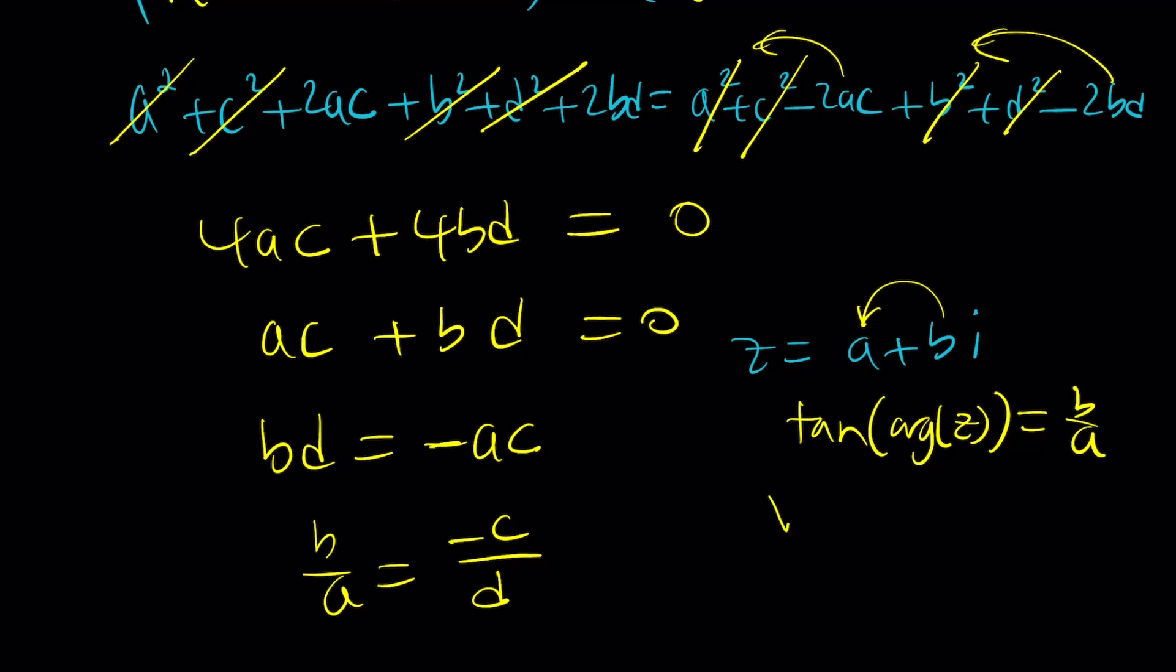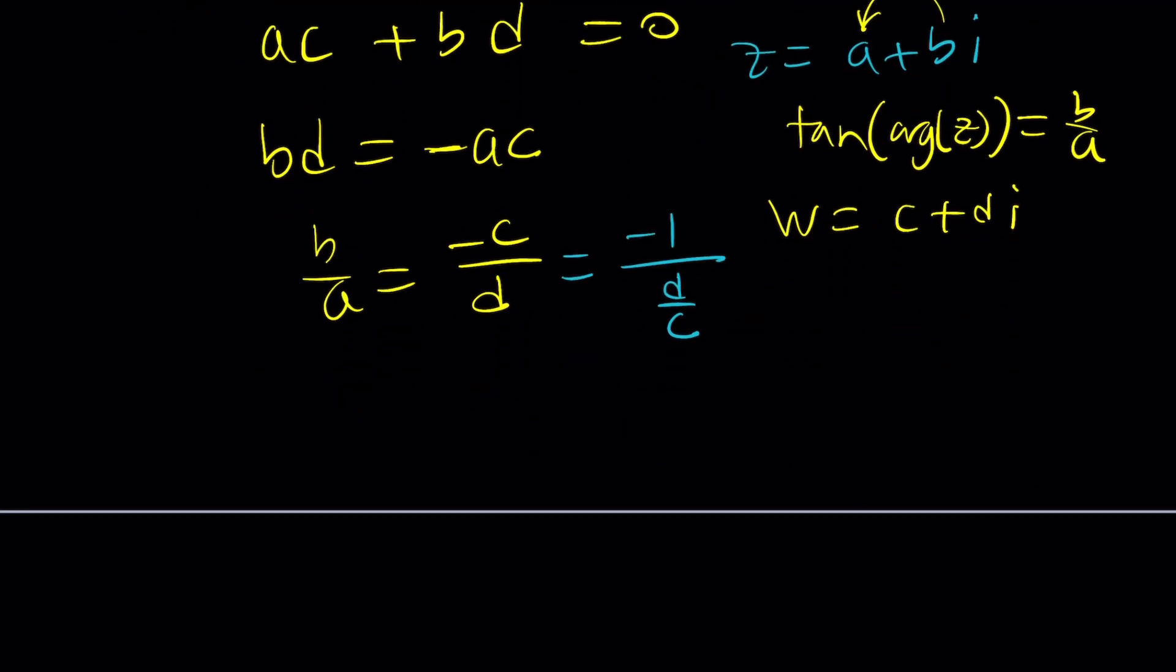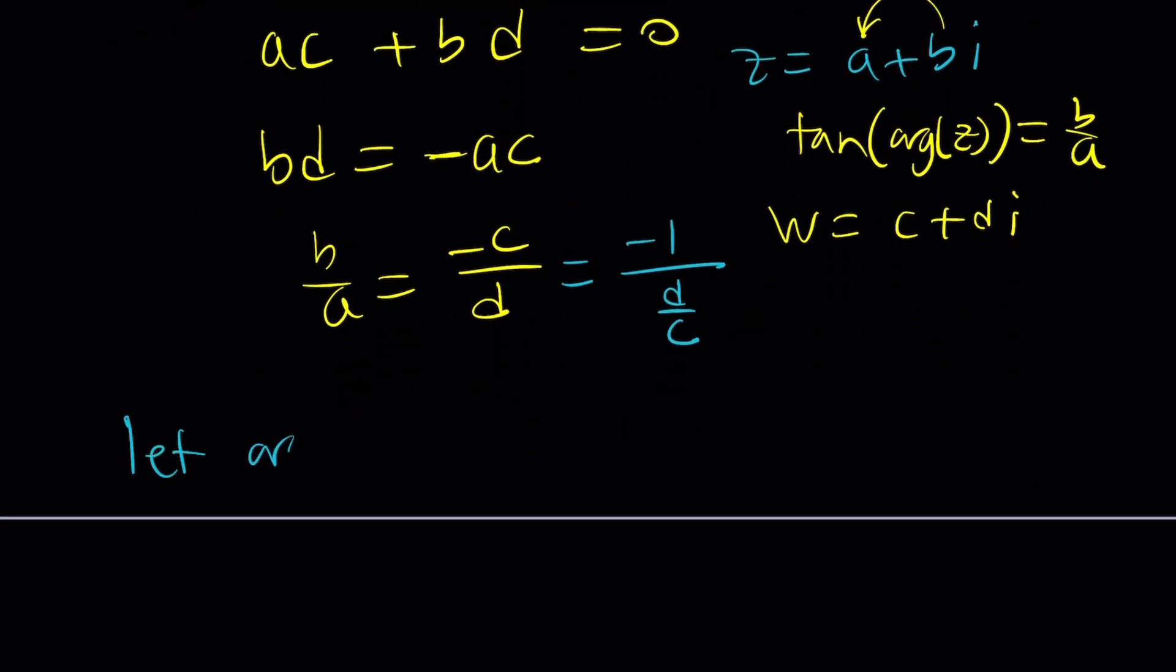But what about negative c over d? If you think about w, it's c plus di. So its tangent is not going to be negative c over d. It's actually going to be positive d over c. But we can write this as negative 1 over d over c. Let argument of z equal theta, and argument of w equal alpha. Tangent theta equals b over a, and tangent alpha is d over c.